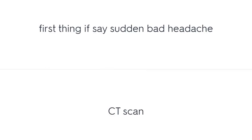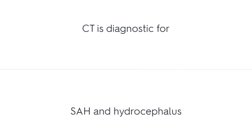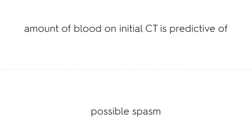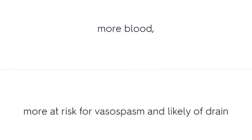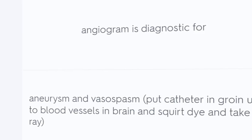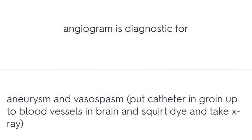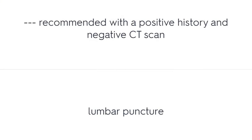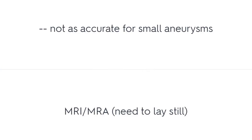The first thing to do for a sudden bad headache is a CT scan. CT is diagnostic for subarachnoid hemorrhage and hydrocephalus. The amount of blood on the initial CT is predictive of possible vasospasm — more blood means more at risk. Angiogram is diagnostic for aneurysm and vasospasm. With a positive history and negative CT scan, a lumbar puncture is recommended. MRA is not as accurate for small aneurysms.